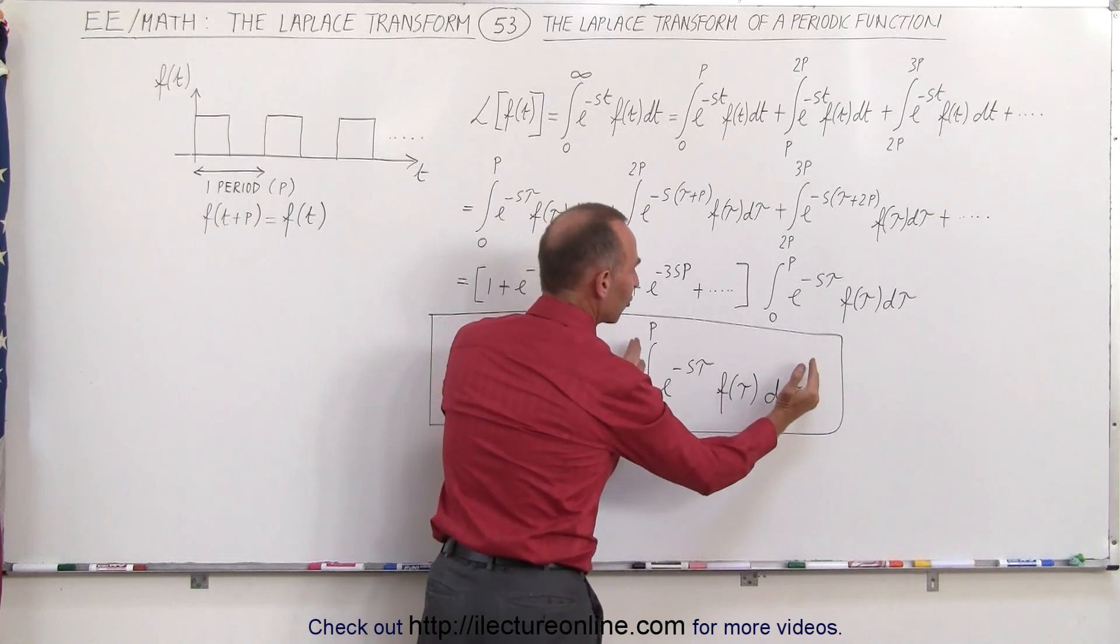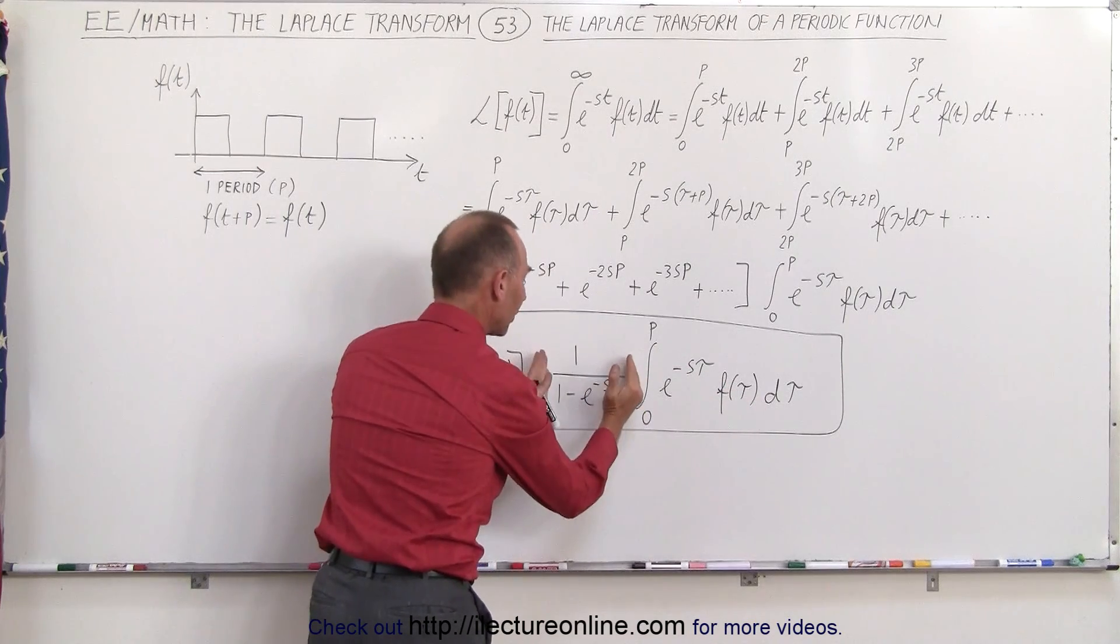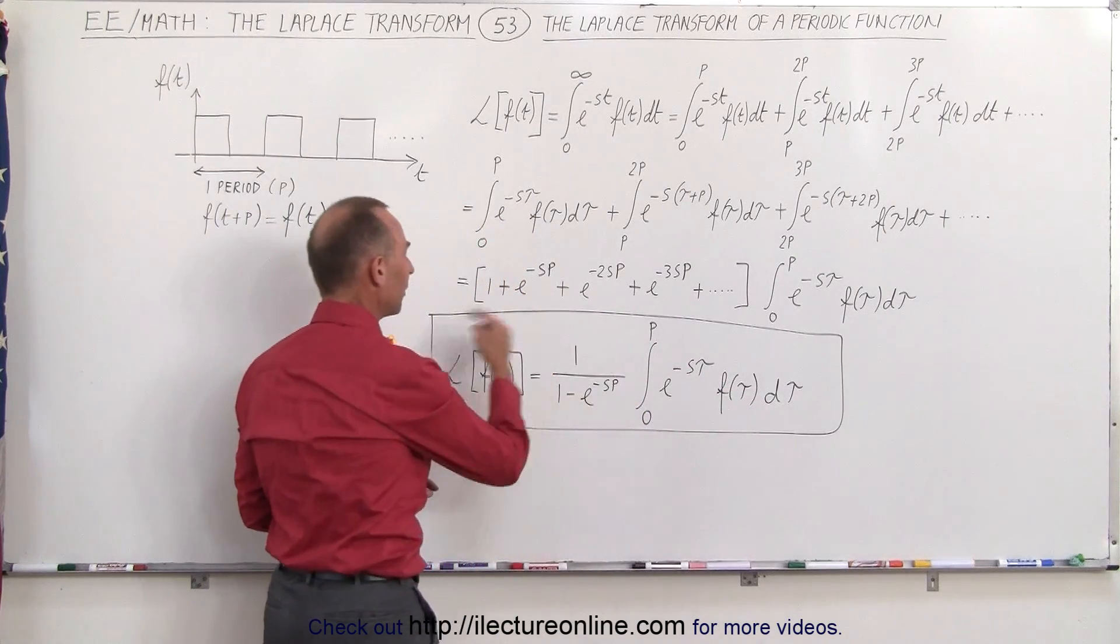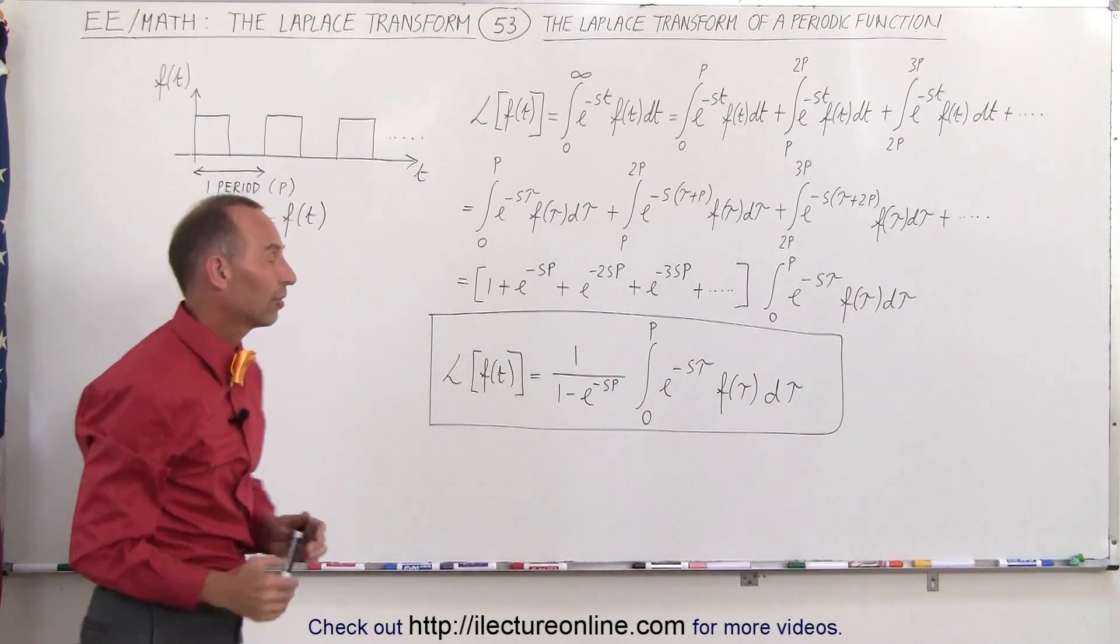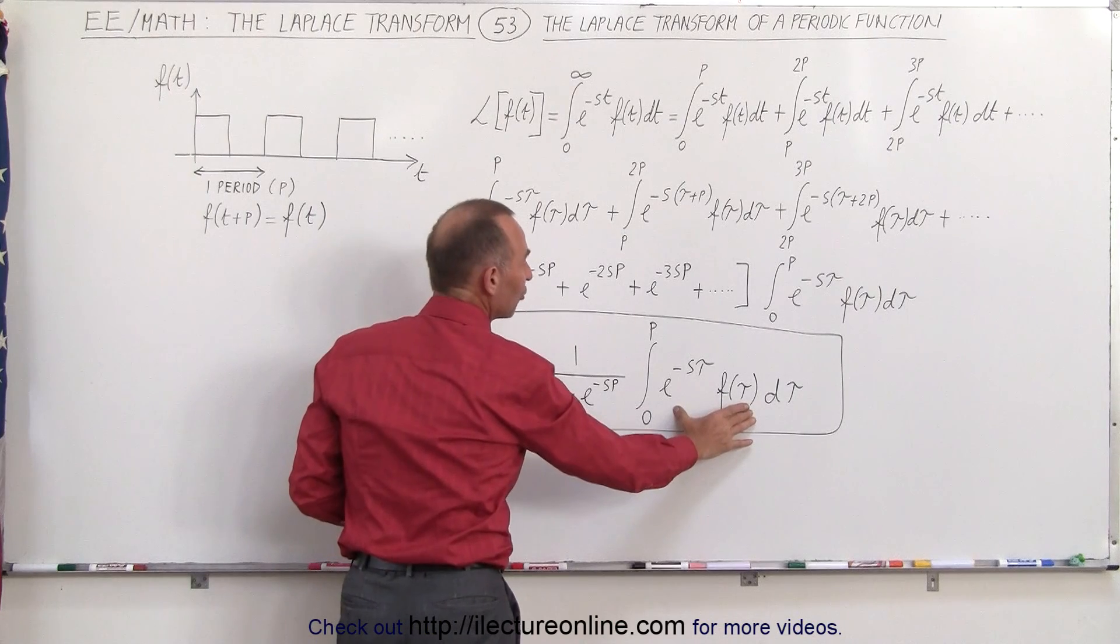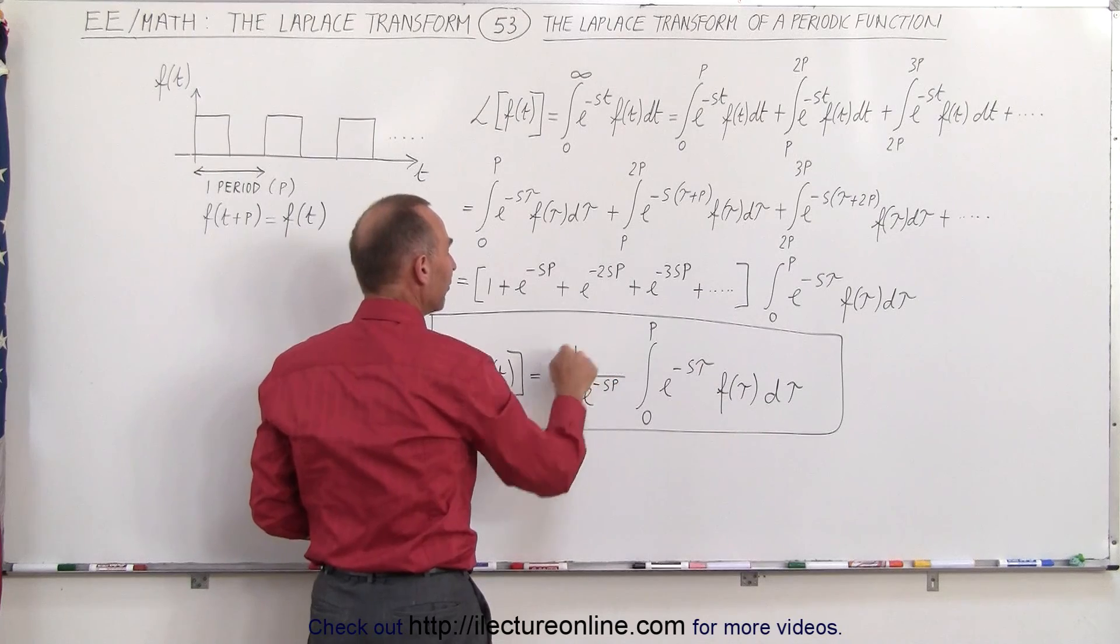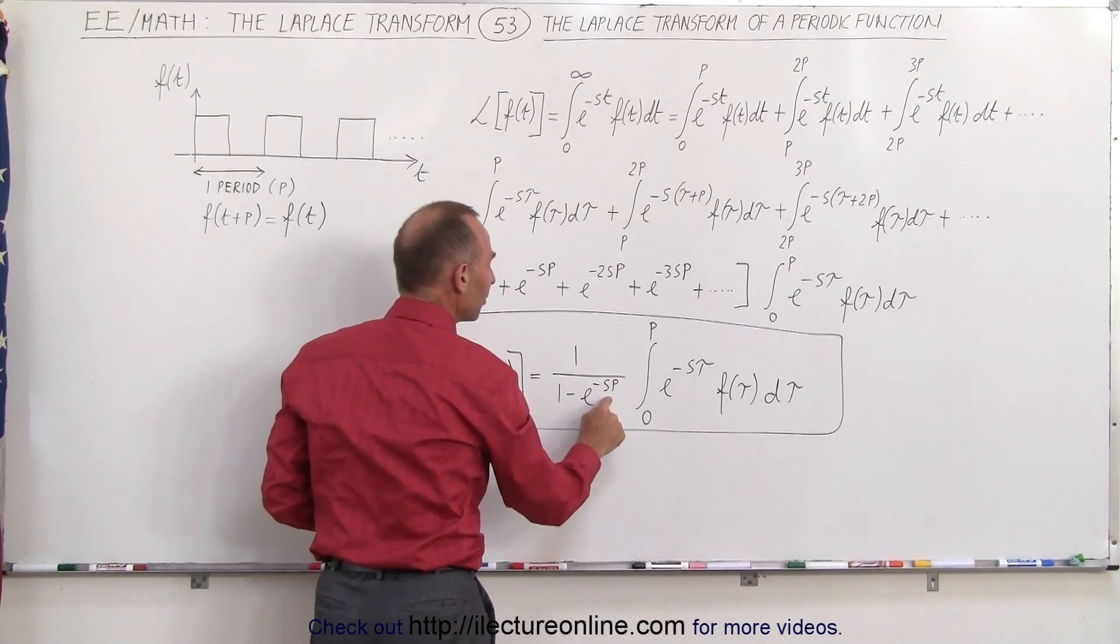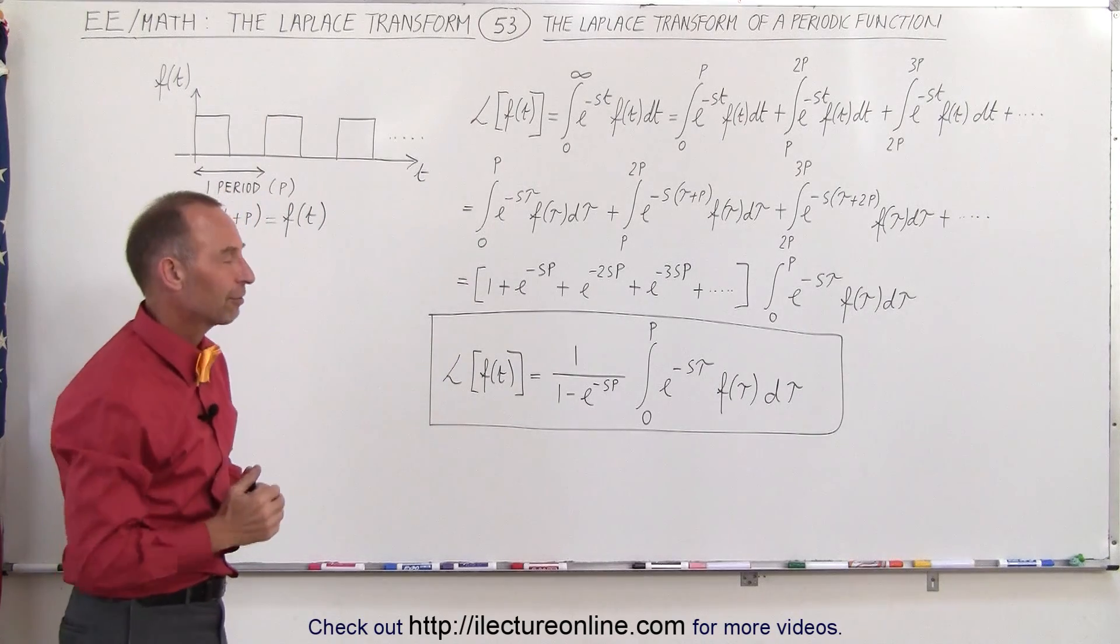Now since this is the Laplace transform of a single pulse, if we then multiply that times this quantity right here, we now have the Laplace transform of the periodic function, all the pulses together. So the only difference is, this is the equation we use to find the Laplace transform of a single pulse, and then we multiply that times 1 divided by 1 minus e to the minus sp, and now we have the Laplace transform of the entire periodic function.